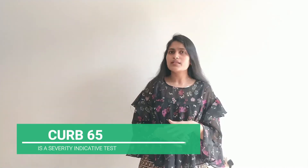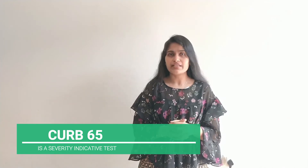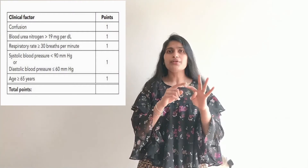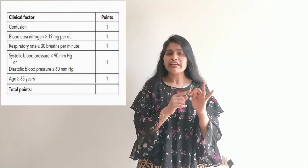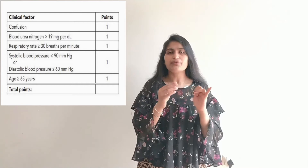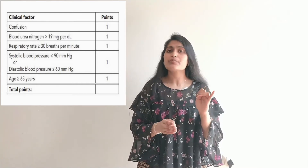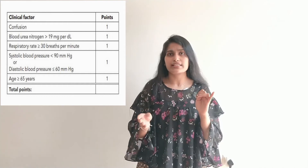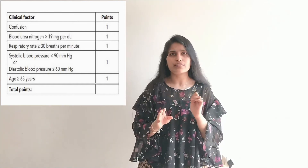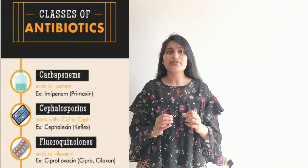If patients show symptoms such as septic shock or respiratory failure, that is an indication for immediate ICU admission. CURB-65 is also a severity indicator test based on five variables: Confusion, Blood urea level, Respiratory rate greater than or equal to 30, Blood pressure where systolic is less than or equal to 90 and diastolic less than or equal to 60, and Age greater than or equal to 65.